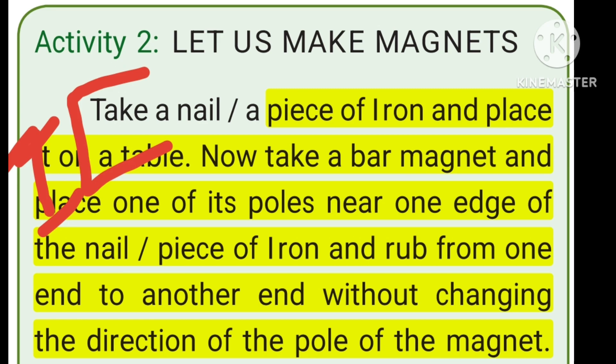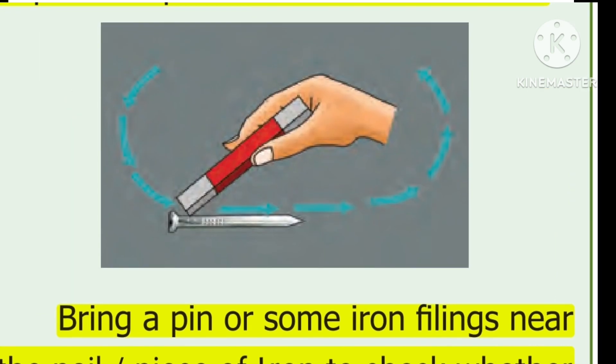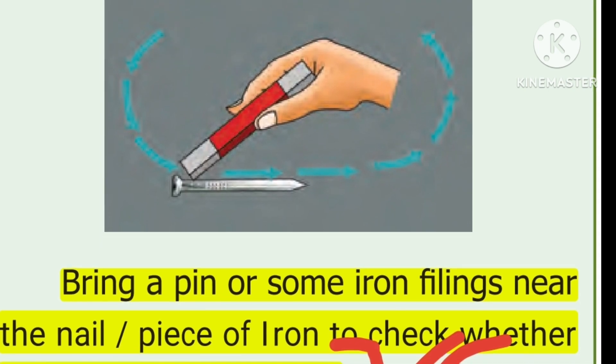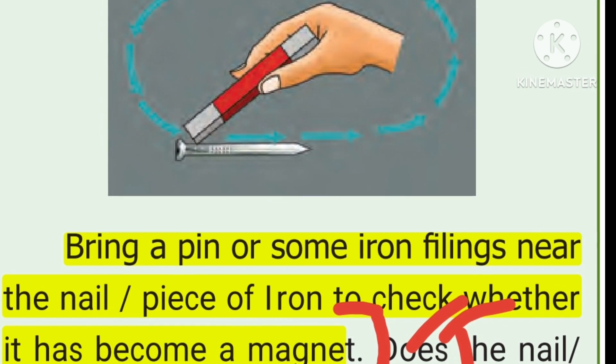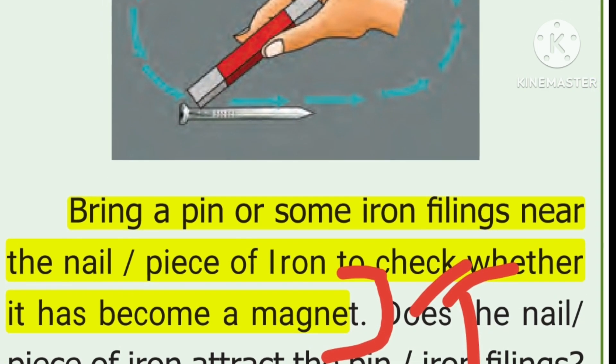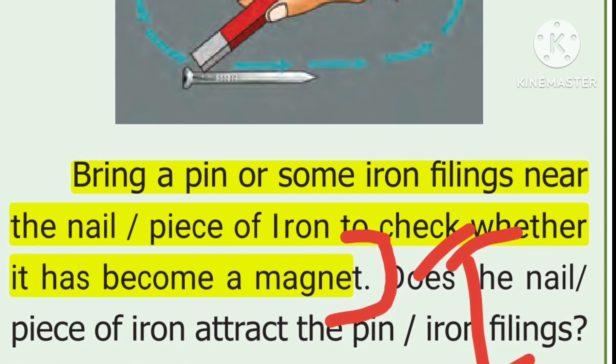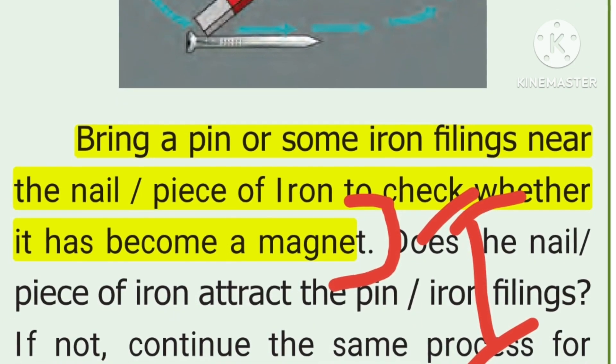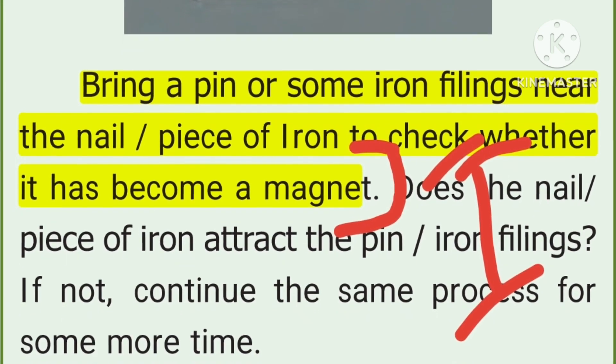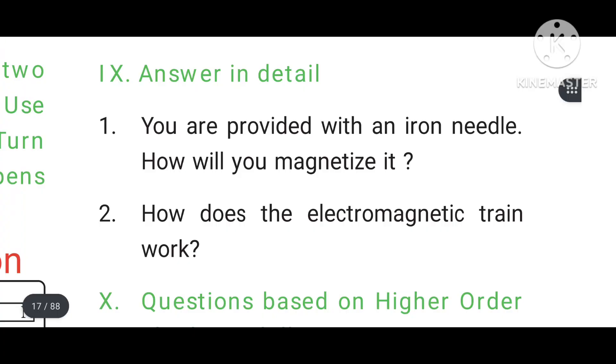Take a piece of iron and place it on the table. Now take a bar magnet and place one of its poles near one edge of the piece of iron and rub from one end to another end without changing the direction of the pole of the magnet. Repeat the process for 30 to 40 times. Bring a pin or some iron filings near the piece of iron to check whether it has become a magnet.